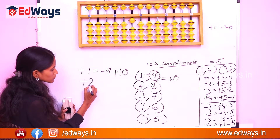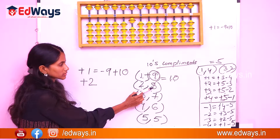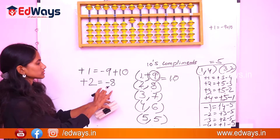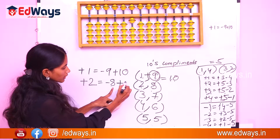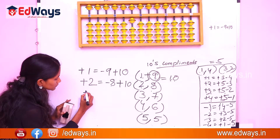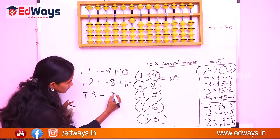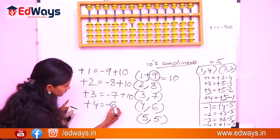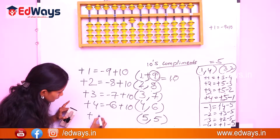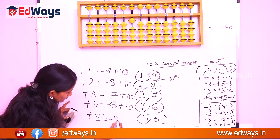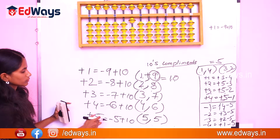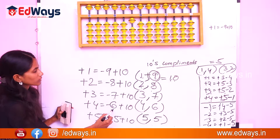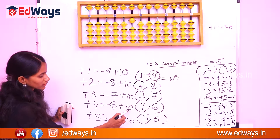For plus 2, what is 2's complement? It is 8. So plus 2 equals minus 8 plus 10. That is, we subtract the complement and add 10. Similarly, plus 3 equals minus 7 plus 10. Plus 4 equals minus 6 plus 10 — subtract the complement and add 10.